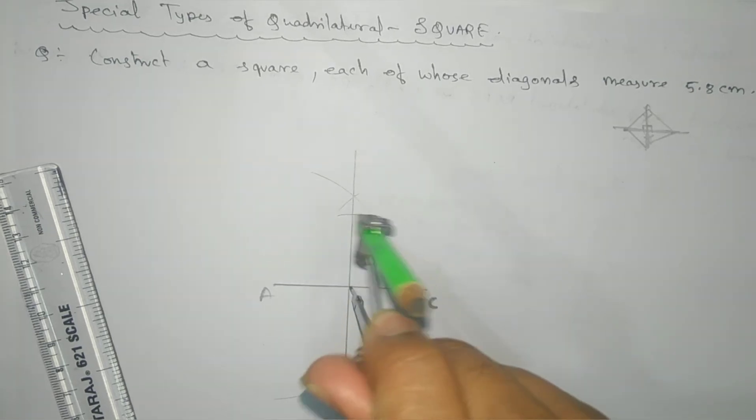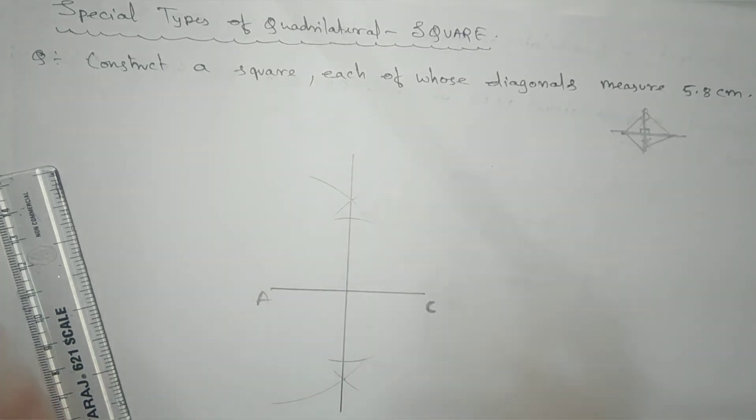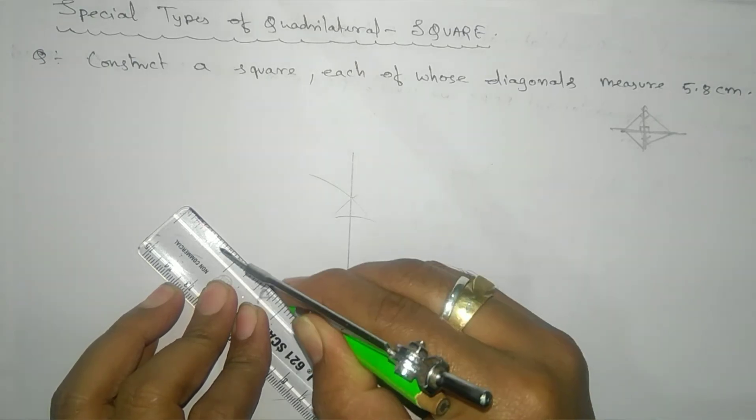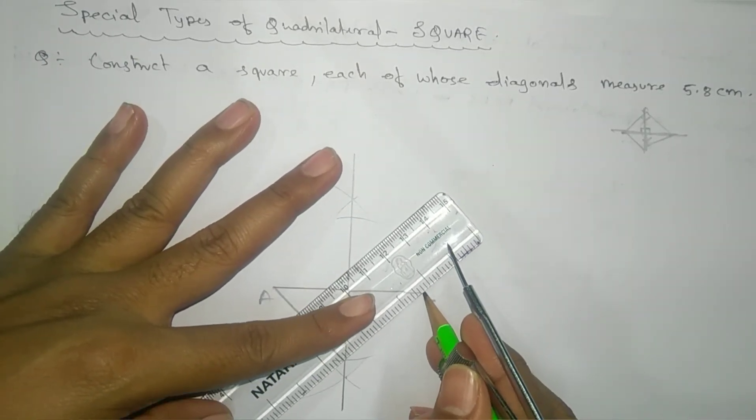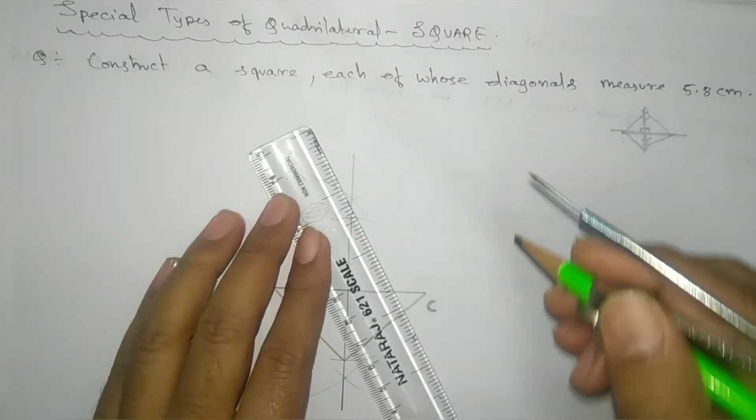Get one arc from this side and another from this side. This will join here - this will be your B. And here, from this, similarly this side.